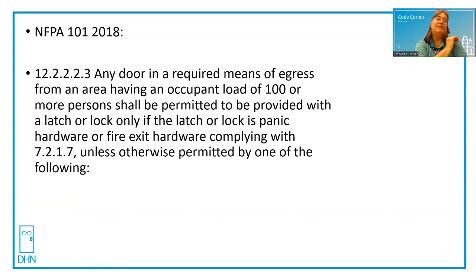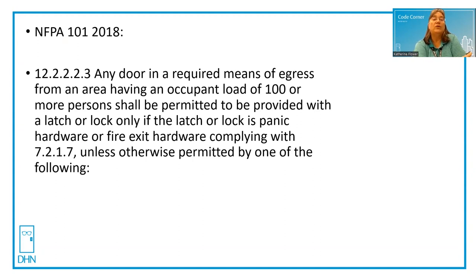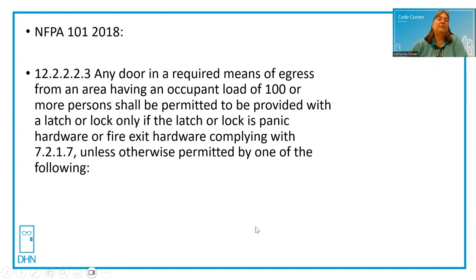The nice thing about IBC is it tells you right in the paragraph what occupancy types you can use — where permitted versus where something is required. And NFPA 101 spells it out, but then you have to look at the occupancy chapter.